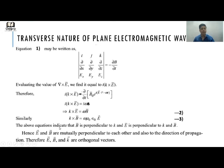The equations K × E = ωB and K × B = −ωμ₀ε₀ E indicate that B is perpendicular to K, and E is perpendicular to both K and B. Hence E and B are mutually perpendicular to each other and also to the direction of propagation — E, B, and K are orthogonal vectors. Thank you.